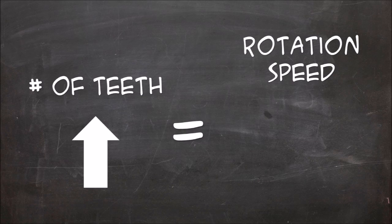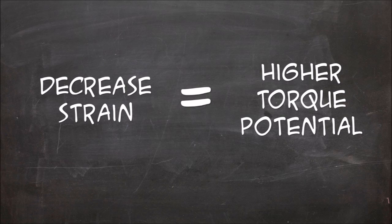Now, as you increase the number of teeth, you decrease the rotation speed of the set as a whole, but this decreases strain on the gear set as well, so you get more torque.